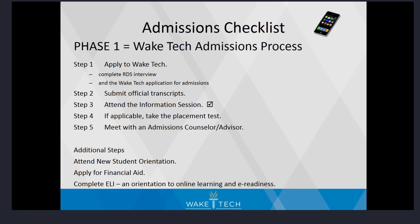After the first four steps are complete, it is time to meet with an advisor at the Perry Health Science Campus to create an academic plan. Students new to the college will need to complete new student orientation, and students seeking enrollment in online classes will need to complete ELI, an orientation to online learning.